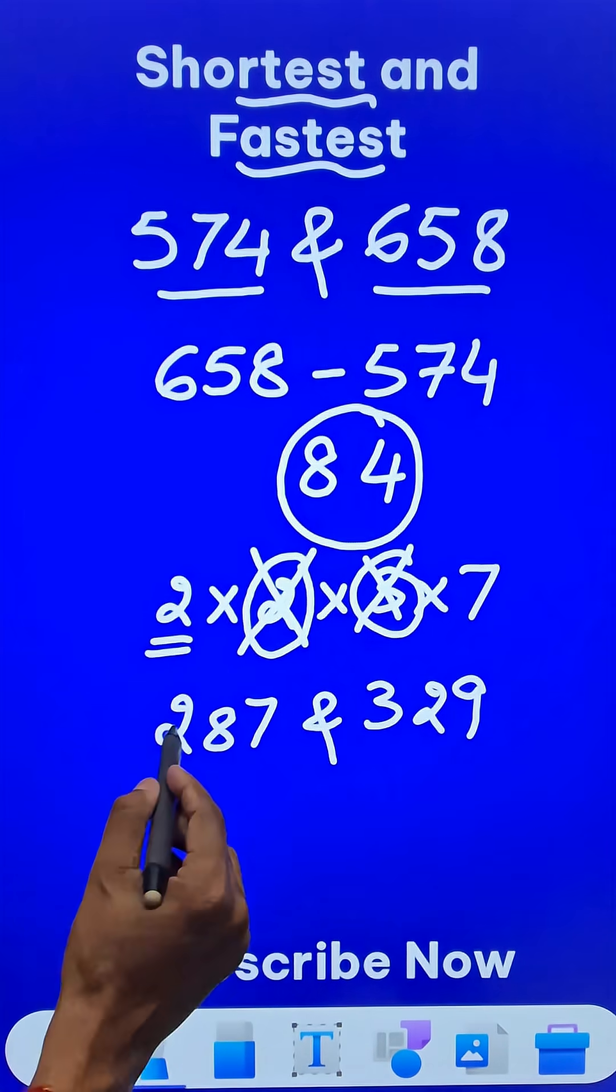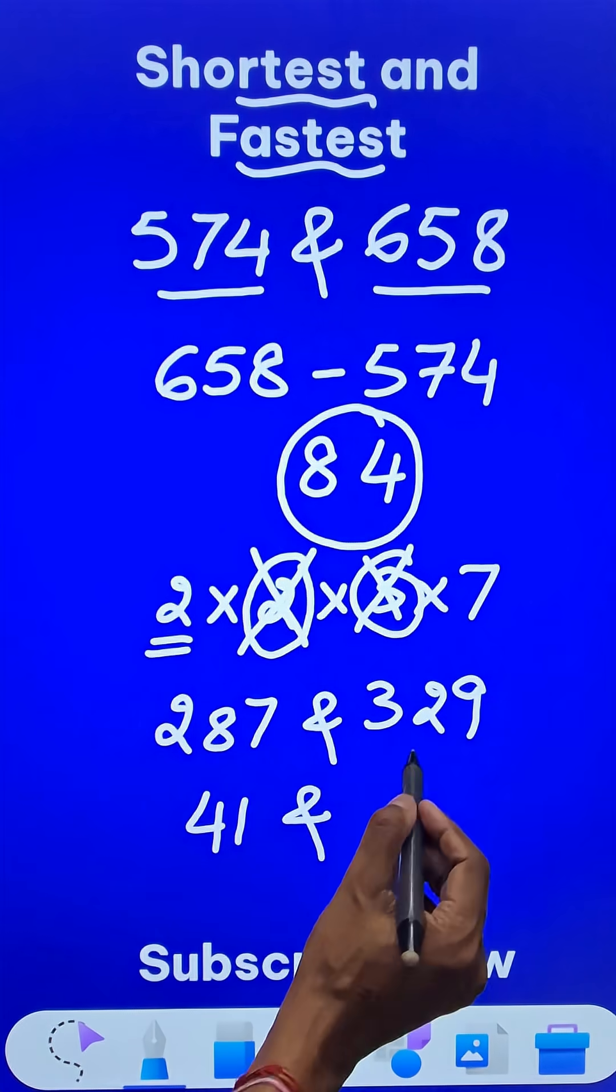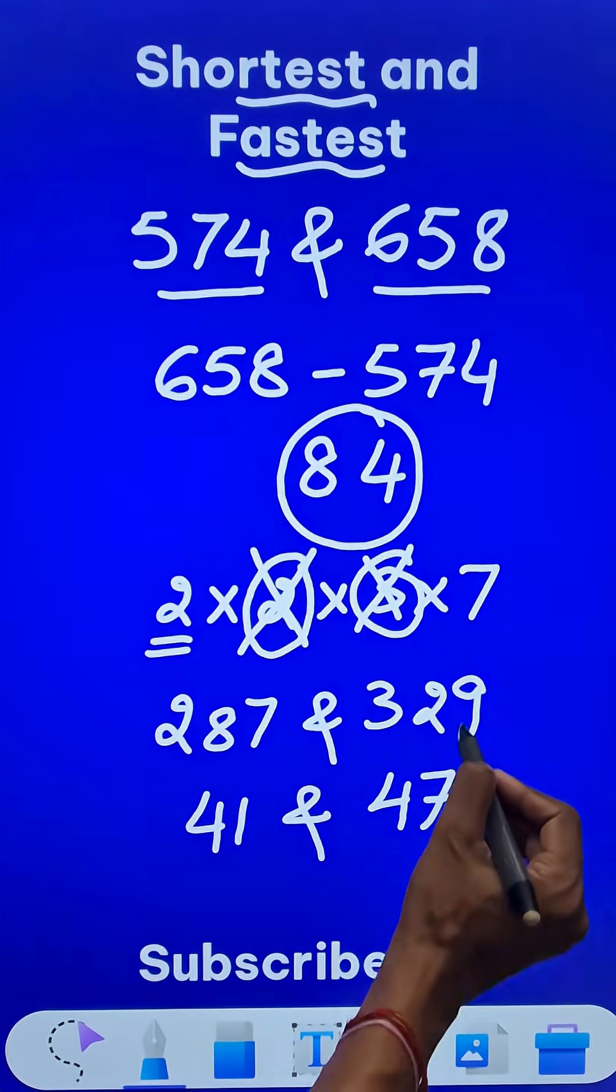Now 7, does it divide 287? 7 times 4 is 28, 7 times 7 is 49. So yes, 7 divides both of them.